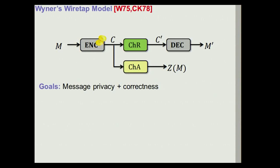Our goals are message privacy — what the adversary gets should not reveal any information about the message M — and additionally correctness, so decryption should be correct with high probability. The only assumption we make in this setting, and this is the most important point, is that the channel to the adversary is in some well-defined mathematical way noisier than the channel to the receiver.